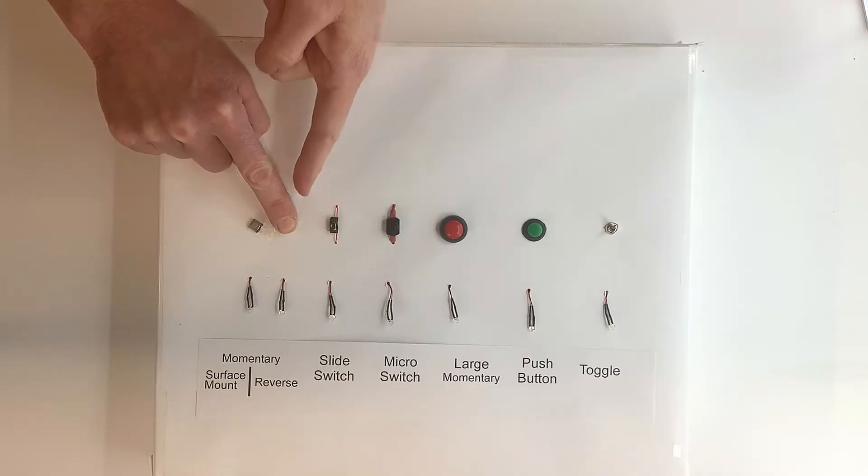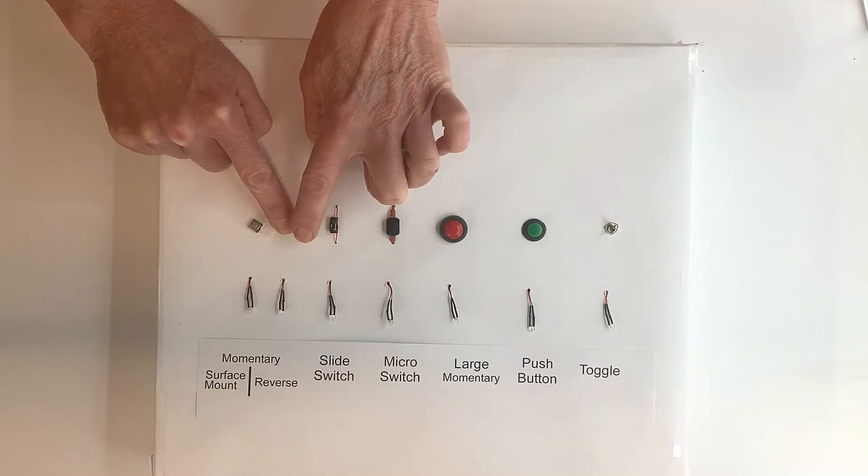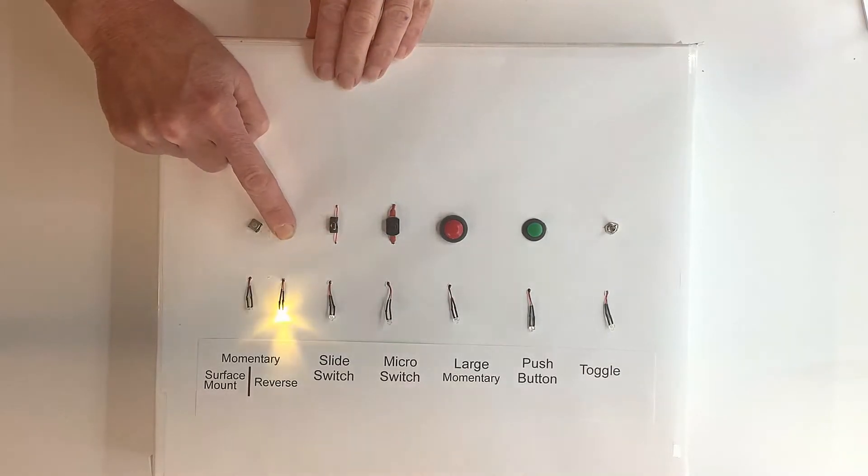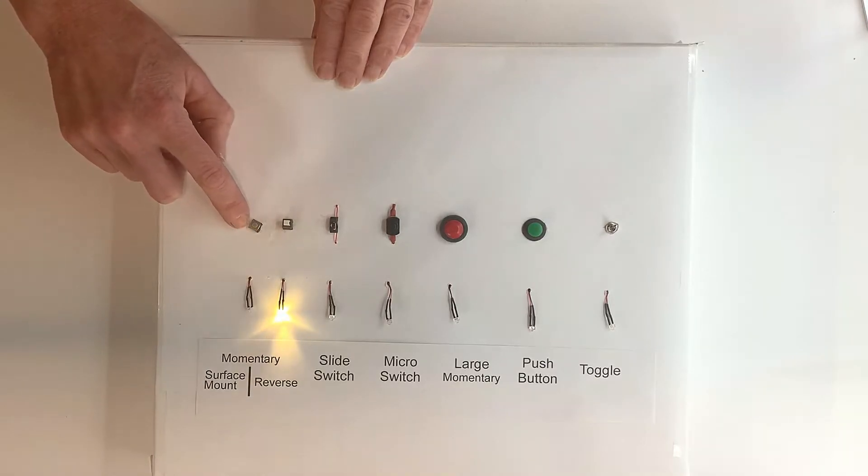So this is good if you want to put it inside a book or inside of a box, because the lid of the box or the book will hold it down, and then when you let off it'll come on. And this is our very small momentary switch.